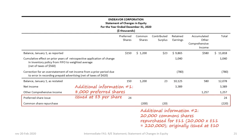Now we deal with additional information: specifically an issue of preferred shares and a repurchase of common shares. These items are not included in retained earnings and therefore not in the statement of retained earnings, because share purchases and issuances do not affect retained earnings in this example. Per additional information number one, 8,000 preferred shares were issued at $3 per share, adding $24,000 to the preferred share column and the total. Per additional information number two, 20,000 common shares were repurchased for $11 each, totaling $220,000, reflected as $200,000 in the common share column and $20,000 in contributed surplus, summing to $220,000 in the total column.